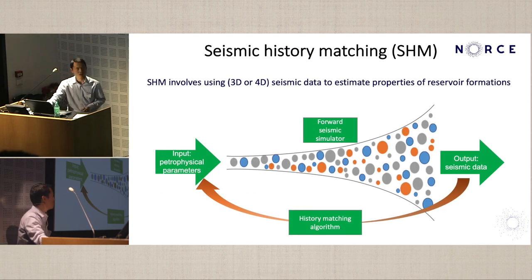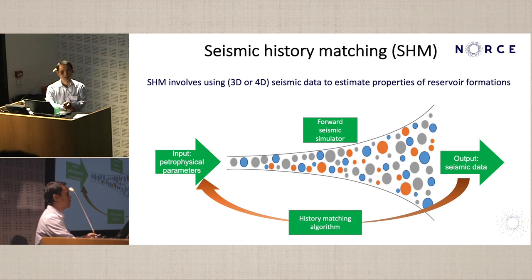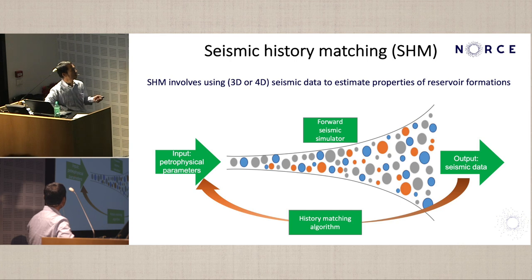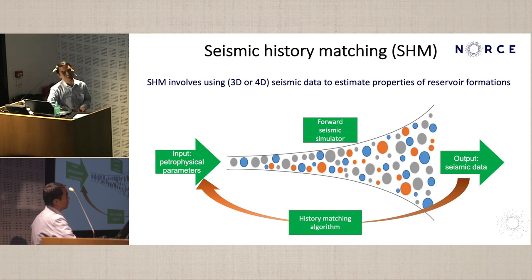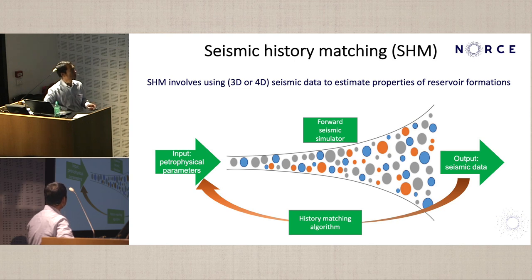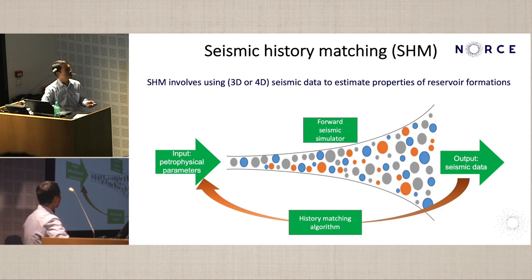For reservoir characterization problems, we often use seismic data to estimate the properties of reservoir formation. This is called seismic history matching. In a typical seismic history matching workflow, we have input petrophysical parameters, which we plug into a forward seismic simulator to get simulated seismic data. We also have observed seismic data, and we adopt a history matching algorithm to update the petrophysical parameters so that simulated data matches the observed data better.